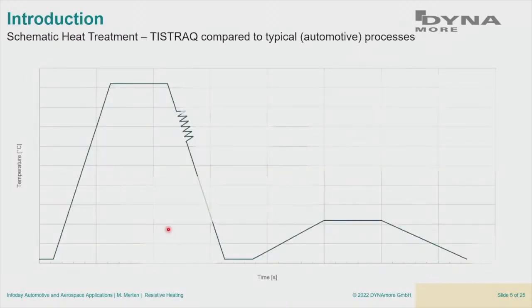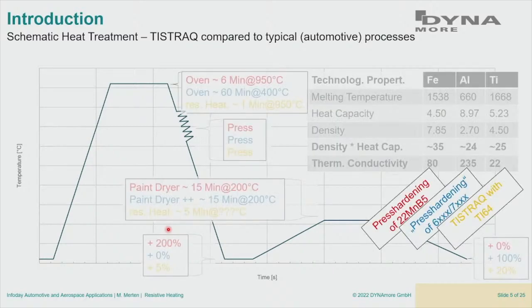We can compare this process to other processes known from automotive and aerospace industry, best done on a schematic heat treatment diagram. I put three processes for three families of materials: press hardening of 22MnB5 — I think it's the only structural steel in a body-in-white where the automotive guys give the alloy composition — press hardening of 6000 and 7000 aluminum alloys, and our T-STRAC process.